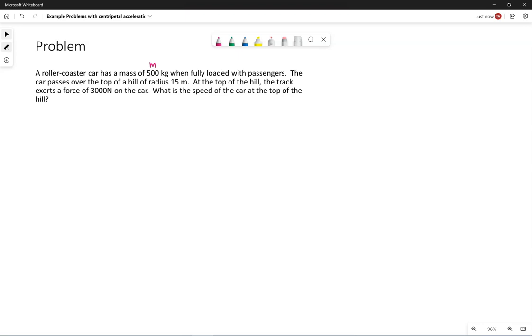It tells us the car passes over the top of a hill. So our car's up here somewhere. The hill itself has a radius of 15 meters.